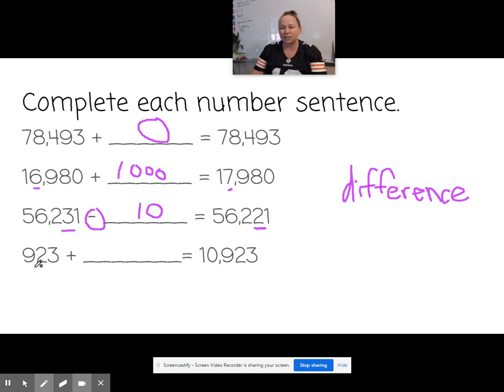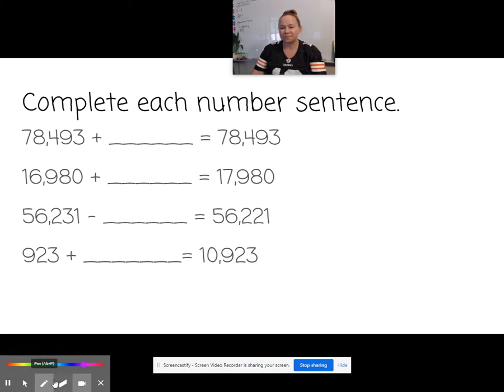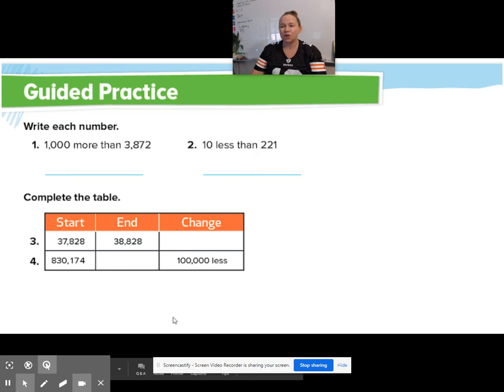How about this last one? 923 plus something equals 10,923. Well, these two parts are the same. So what's different is this 10,000. So that must be what was added onto 923 was 10,000. You're doing a great job.